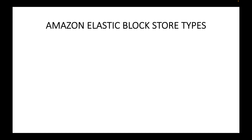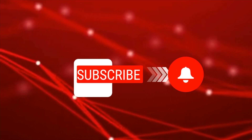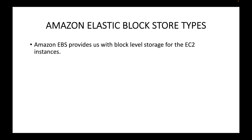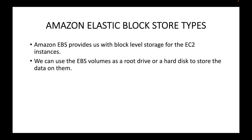EBS also provides different options depending on the performance and the applications we are going to run. In this session we will look at the different types and understand where you can use them. EBS provides block level storage that we can use with our EC2 instances. Whenever we launch our EC2 instances we need to specify the block level storage, which is used to store your data.